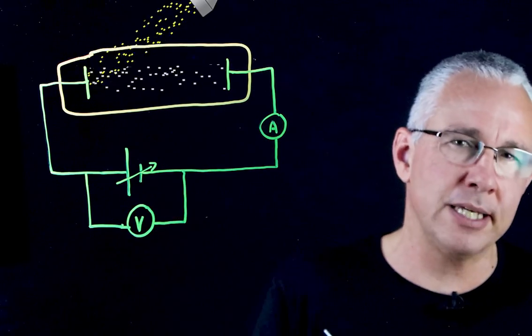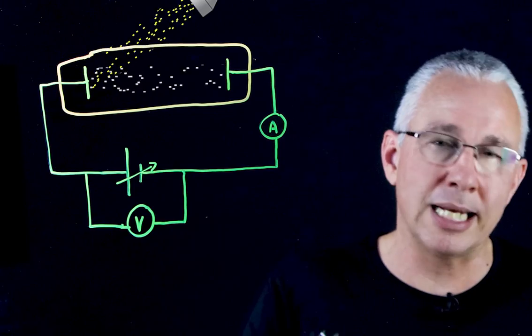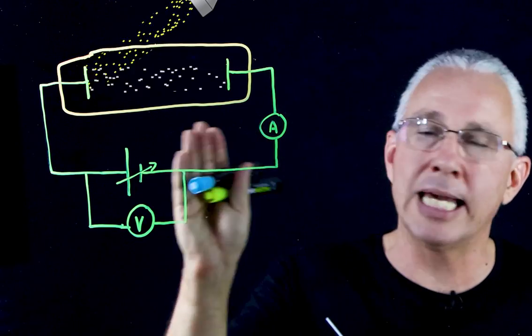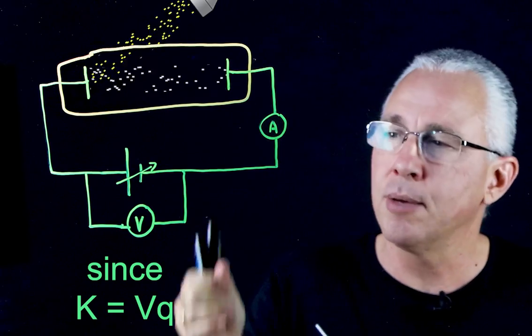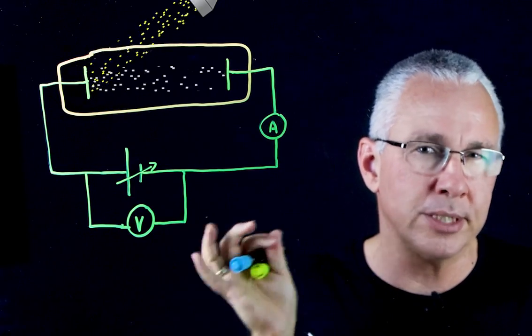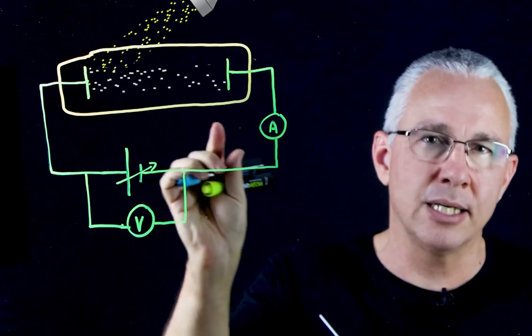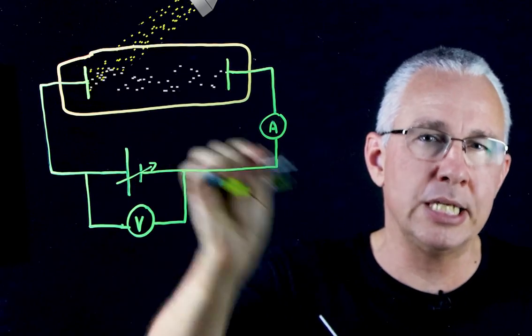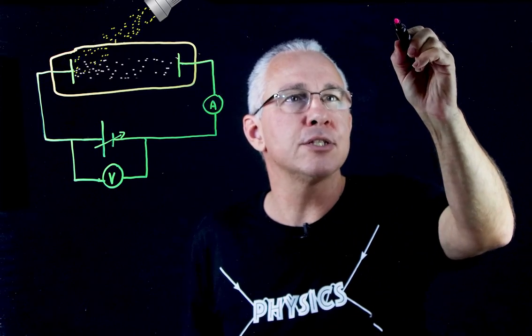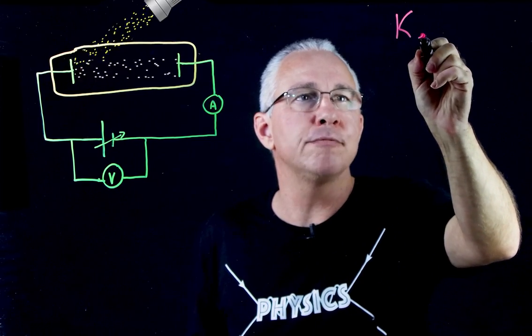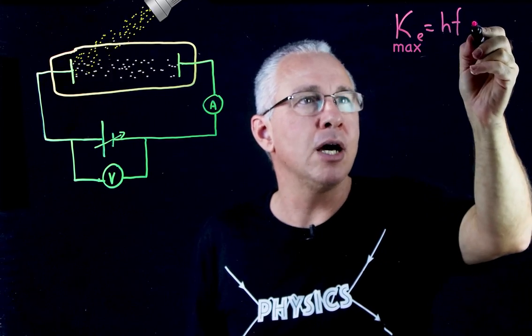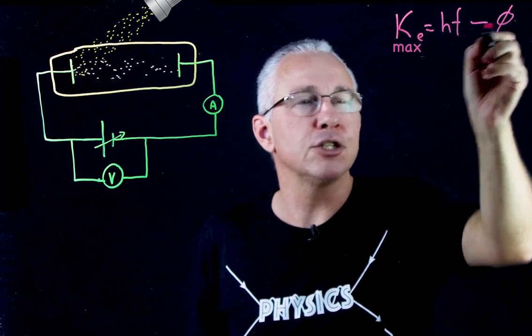And we also have a voltage setup here that allows us to apply a stopping voltage and work out the kinetic energy of the photoelectrons. The mathematical formula for all of this is that the kinetic energy of my photoelectrons is equal to the photon energy that arrives minus the work function.